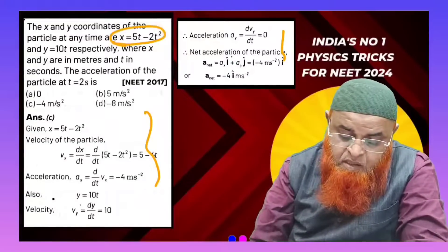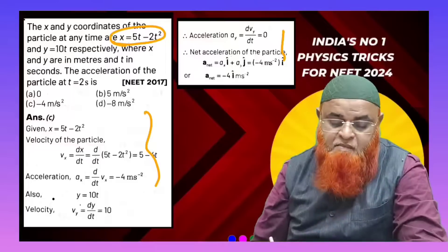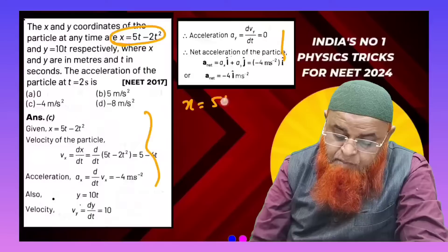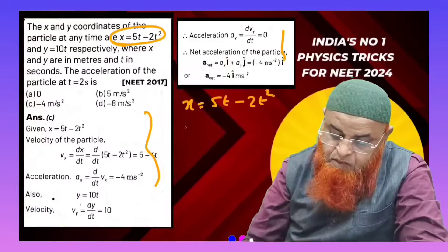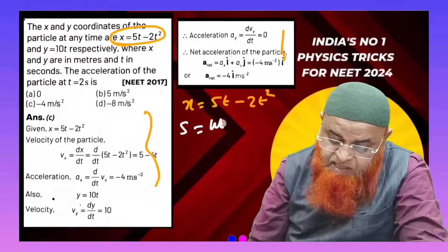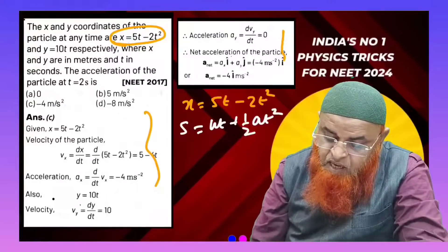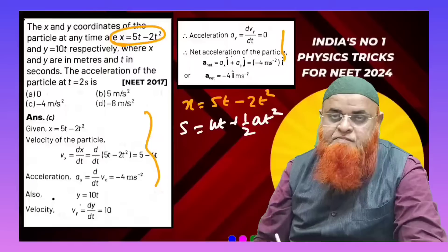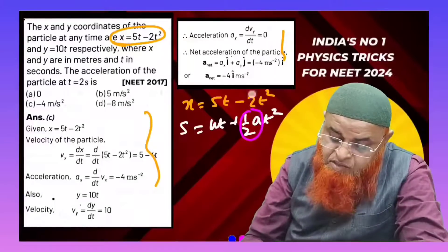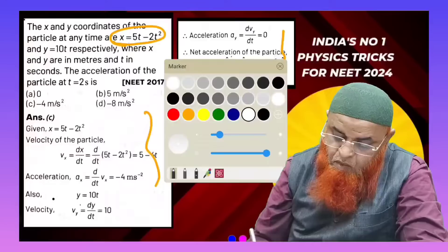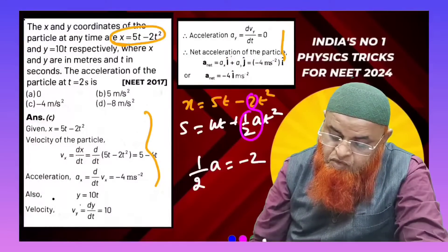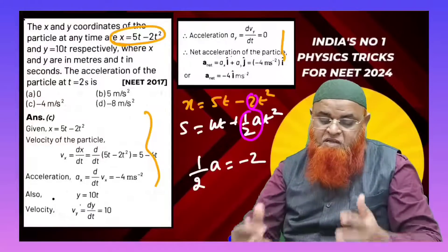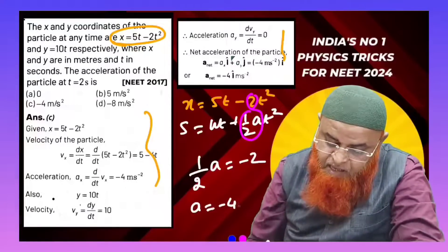You can see this equation here. Write the equation and compare it: 5t minus 2t squared. Compare this with s = ut + ½at². What you need to do is compare these two, so half a corresponds to minus 2.